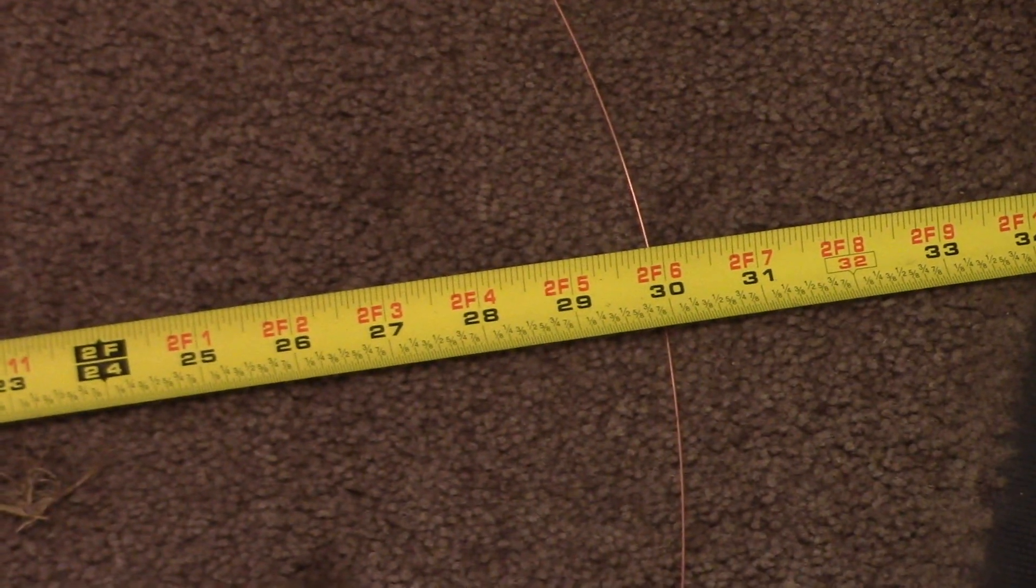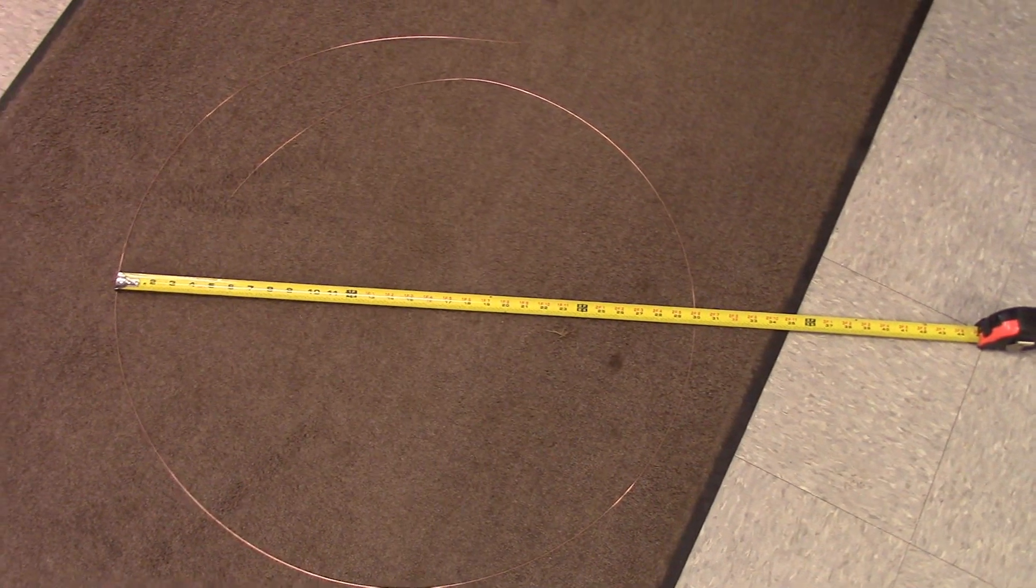And the measurement of the cast is right around 30 inches. So that's how you measure the cast of a MIG wire.